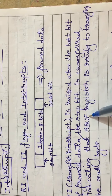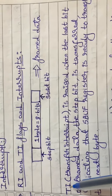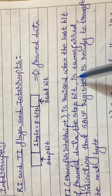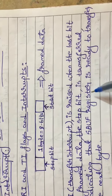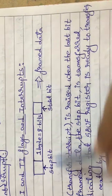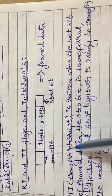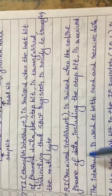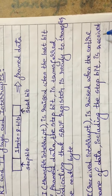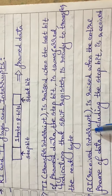SBUF is the register responsible for sending or receiving data serially. When the entire frame of data is received at the receiver and the stop bit is received, the Transfer Interrupt is raised. Similarly, the Received Interrupt is raised when the entire frame of data, including the stop bit, is received at the receiver.